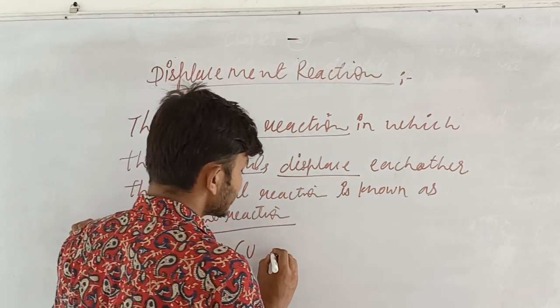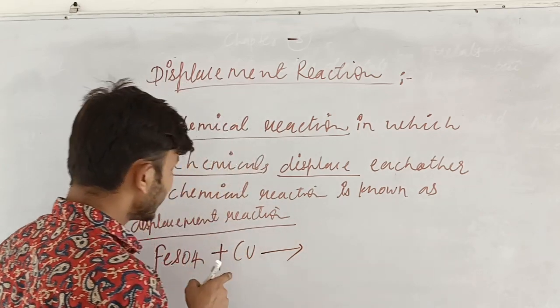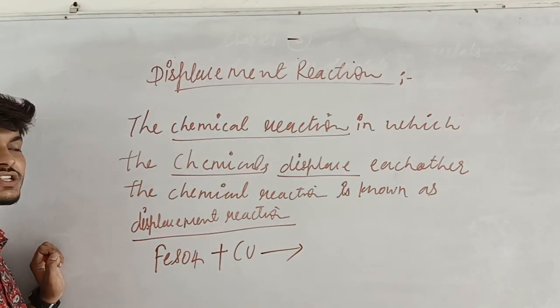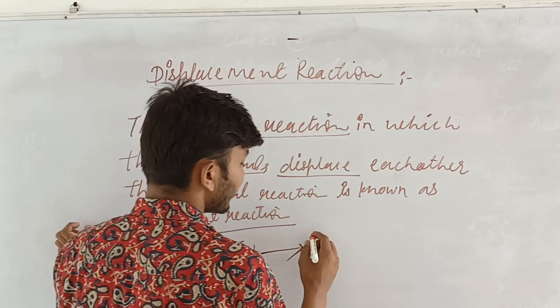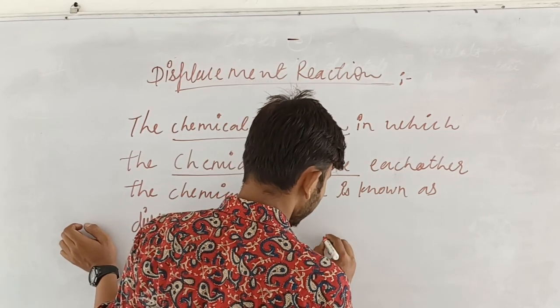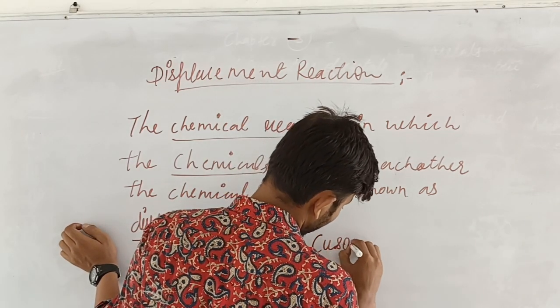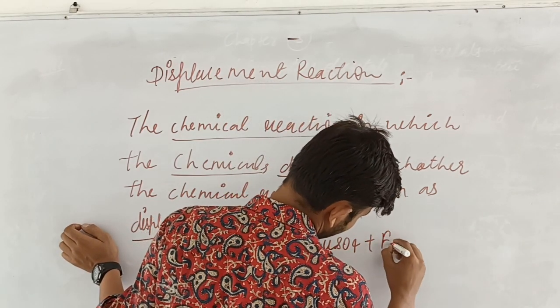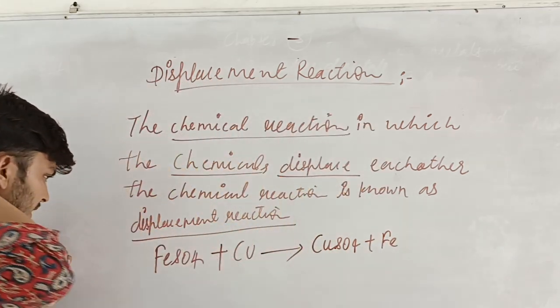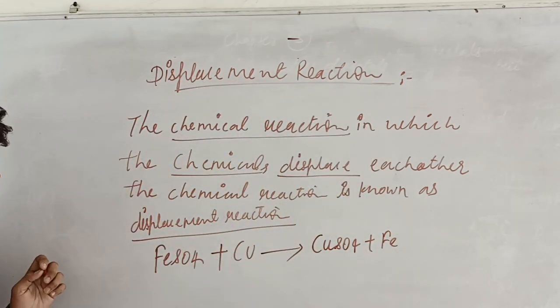So, compared to iron and ferrous, it is more reactive. Now, when we make them react together, ferrous is displaced by copper. Ferrous is displaced by copper.